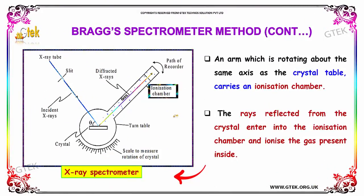An arm, which is rotating about the same axis as the crystal table, carries an ionization chamber. The X-rays reflected from the crystal enter into the ionization chamber and ionize the gas present inside.